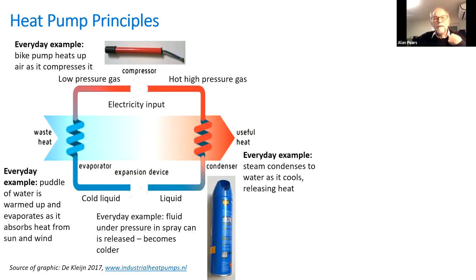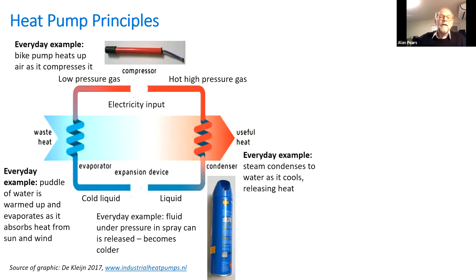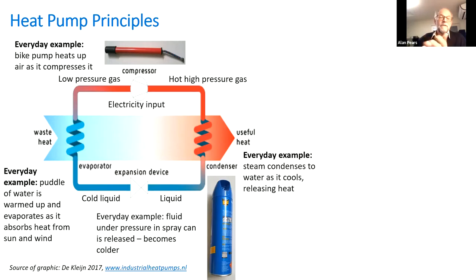The hot gas then goes through another heat exchanger called the condenser, where the gas condenses back into a liquid — like humid air from a clothes dryer cooling against a window, dumping heat outside and becoming condensation running down the glass. Then this still high pressure liquid goes through an expansion device or pressure reduction valve, becoming the cold liquid again where we started. A spray can is a good example: press the button and the can starts to feel colder.